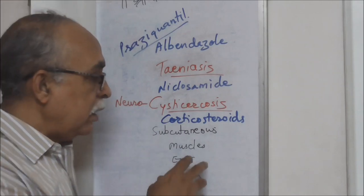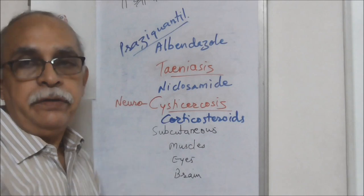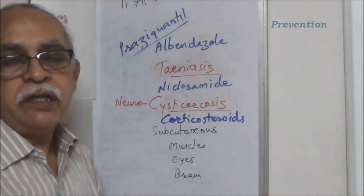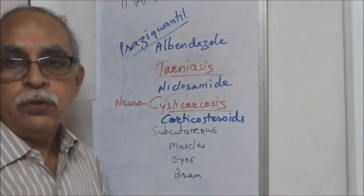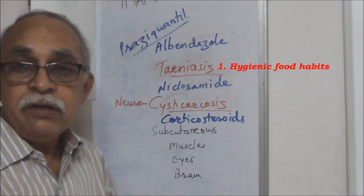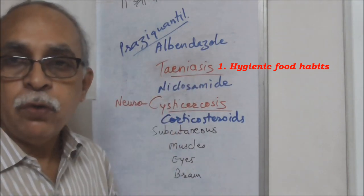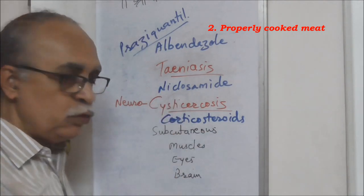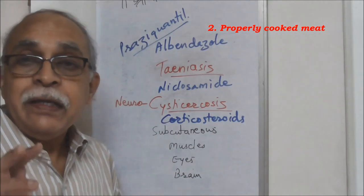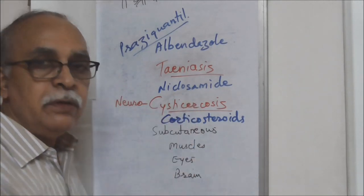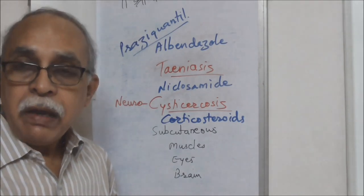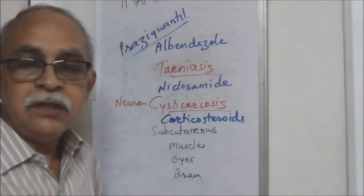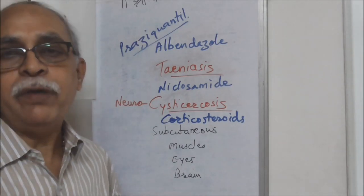Instead of treating the disorder, let us prevent it. The main path for transmission is the fecal route, so hygienic food sources would take care of that. Undercooked pig meat can transmit the disease and can even lead to cysticercosis, so properly cooked meat takes care of that kind of infection. In simple words, appropriate food habits will prevent taeniasis, cysticercosis, or neurocysticercosis.